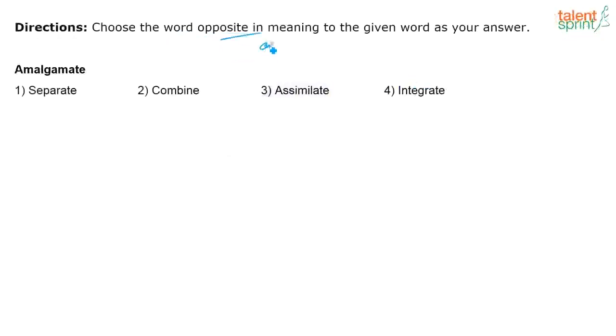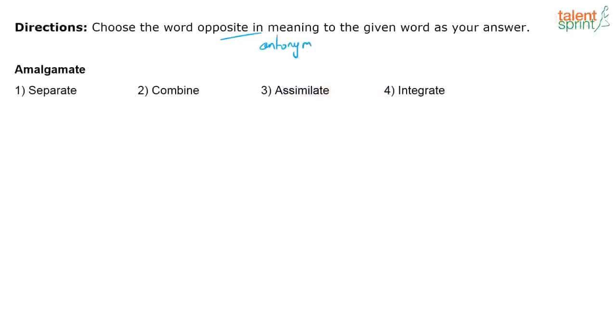Amalgamate — we're looking for an antonym. Amalgamate means to join, combine, or merge — like an amalgam of silver and platinum. Looking at the options: combine, join, assimilate, and integrate are all synonyms. That leaves us with separate as our answer — the obvious antonym of amalgamate.